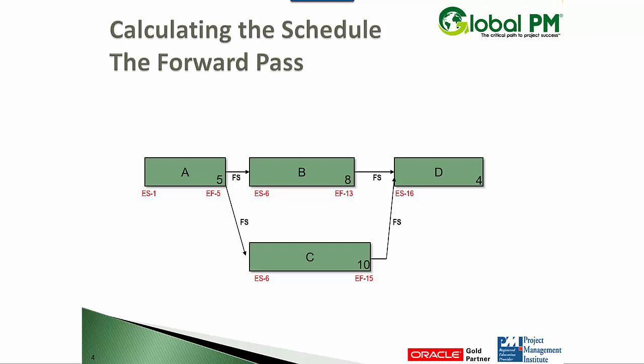And if it finishes four days later, it's all of day 16, 17, 18, and 19. So what we just did is a forward pass, which calculates the early and late dates. Now what we want to do is focus on what's called a backward pass, and we will use that to calculate the total float.